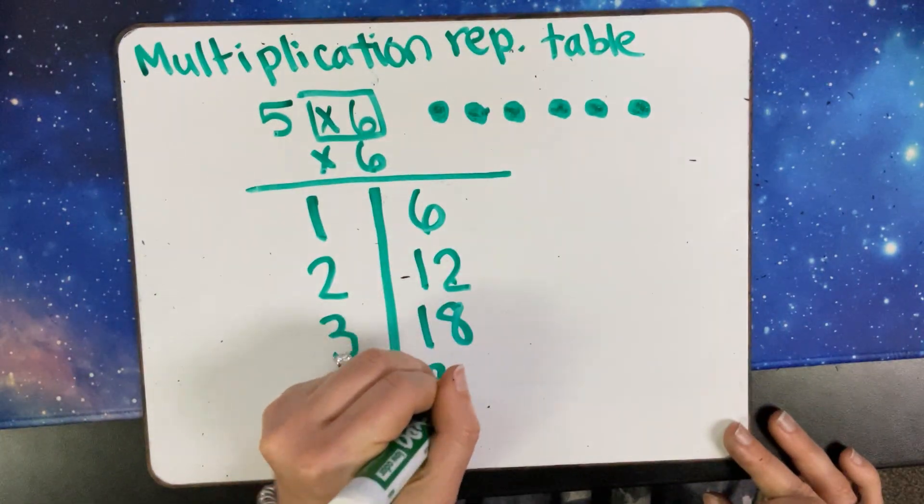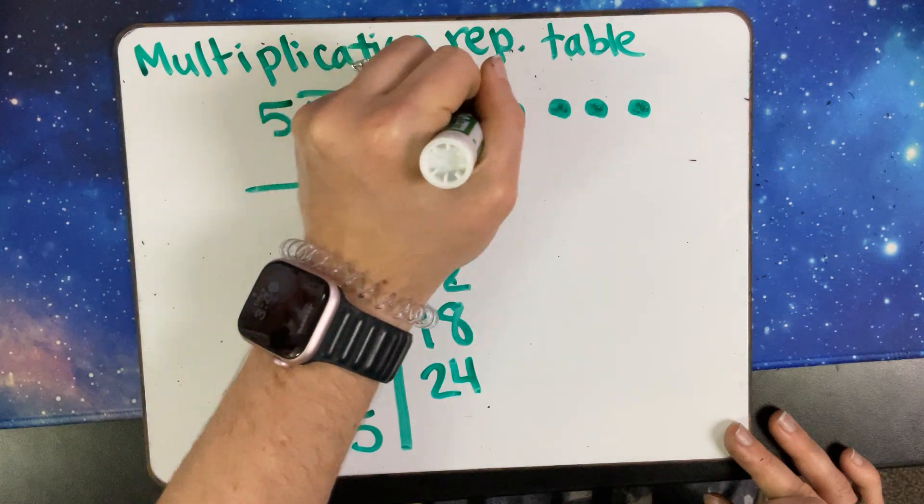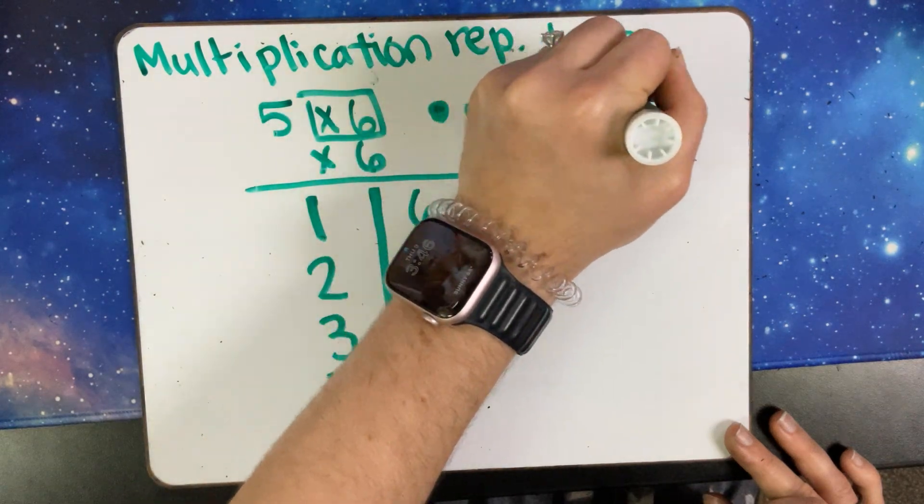And then for my fifth group, twenty-five, twenty-six, twenty-seven, twenty-eight, twenty-nine, thirty.